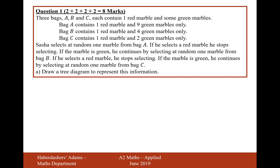Sasha selects at random one marble from bag A. If he selects a red marble, he stops selecting. If the marble is green, he continues by selecting at random one marble from bag B. If he selects a red marble, he stops selecting. If the marble is green, he continues by selecting at random one marble from bag C. Draw a tree diagram to represent this information.